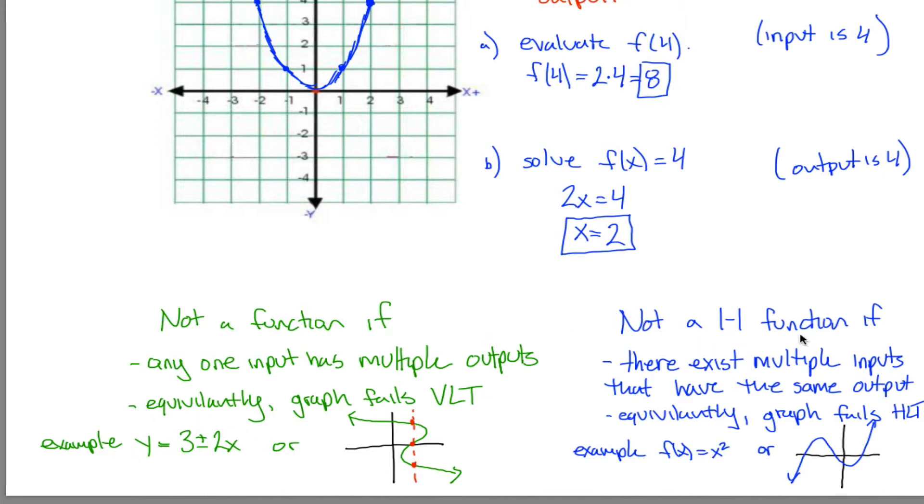When you have a function, you can ask the question, is your function 1 to 1? A function is not 1 to 1 if there exist multiple inputs that have the same output like I had up here. Equivalently, there's this thing called the horizontal line test. And to fail the horizontal line test, much like to fail the vertical line test, there has to be only one or all you need to do is find one horizontal line that intersects your graph in more than one spot. Here's a horizontal line that intersects my graph in more than one spot. What that means is that this graph, this function, is not 1 to 1. And it makes sense. Whatever this x coordinate is and this x coordinate and this x coordinate all have the same height associated with them. And the height, the y coordinate, is the output. So I have multiple inputs with one output, therefore I'm not 1 to 1.